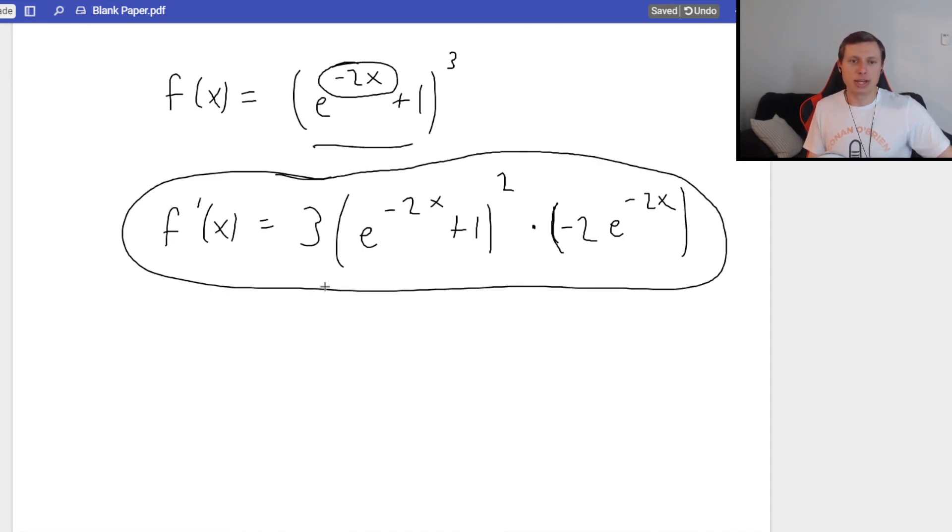This is a perfectly good final answer. Again, if you're curious on how we would simplify this, first I want to say this. Because of this squared out here, this whole thing cannot be simplified like this part alone. Everything else can be, though. So, I can combine this 3, I can combine this negative 2 to give me negative 6. I can also write this e to the negative 2x out in front. And then times the quantity, e to the negative 2x plus 1. That whole thing is squared.